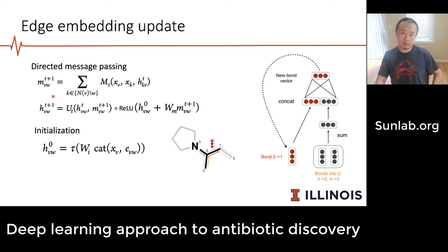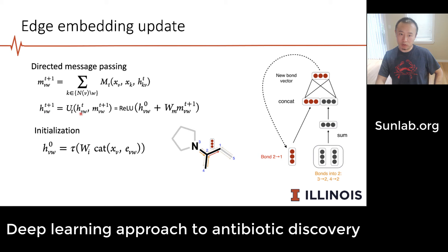Each message between a vertex v and w is a summation of all messages coming from node x_v, node x_k, and edge feature h_{kv}, summed over all neighbors except w itself. This constructs the update message. The edge embedding for the next iteration is then computed via a neural network function over the old embedding plus the new message — in this paper using a ReLU plus a linear combination of the two embeddings.